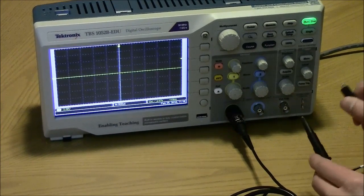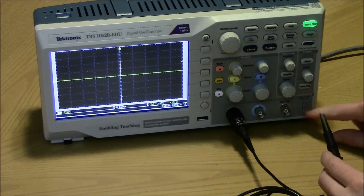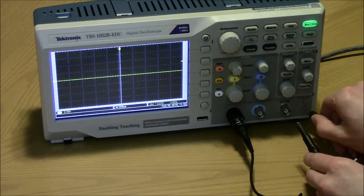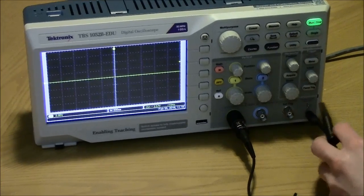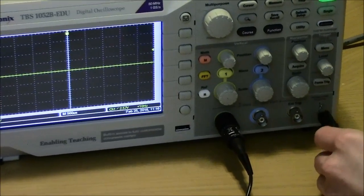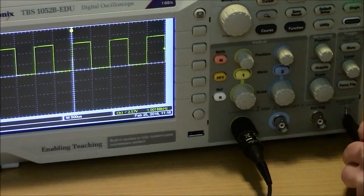So the first signal we'll be looking at will be a simple square wave. It comes from the device itself. It's used for calibrating the probes. This bottom one here is ground so I will put the clip on that. And this one here is the signal and so I will hook that.